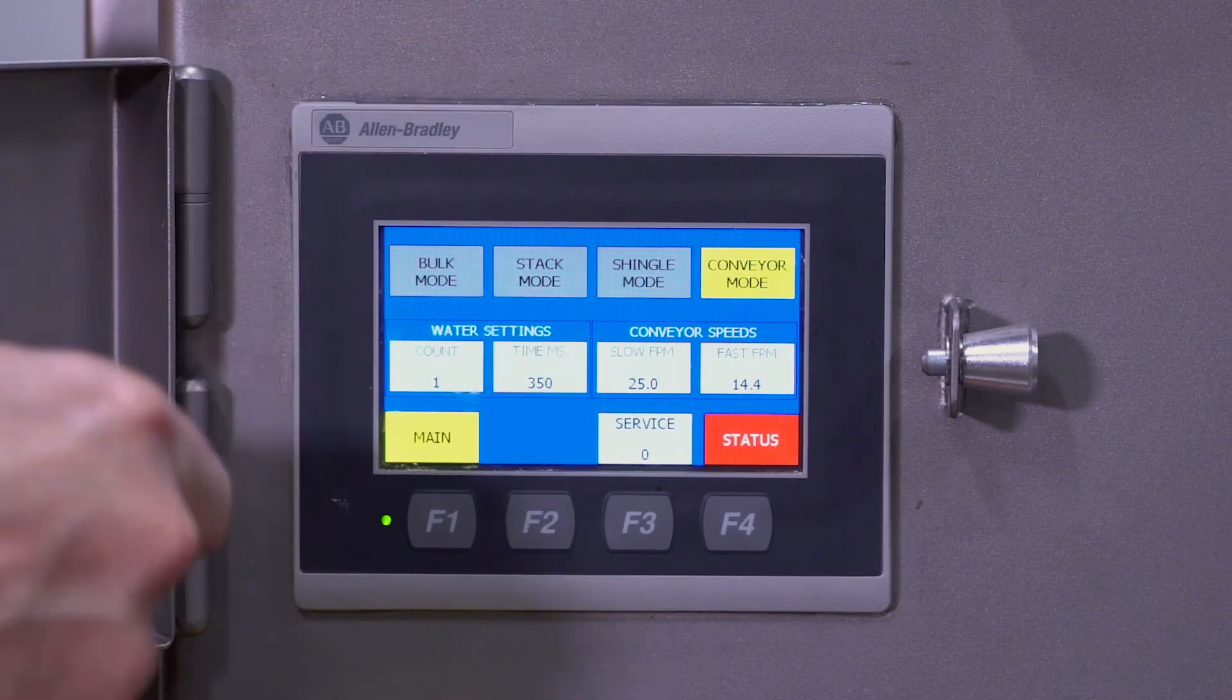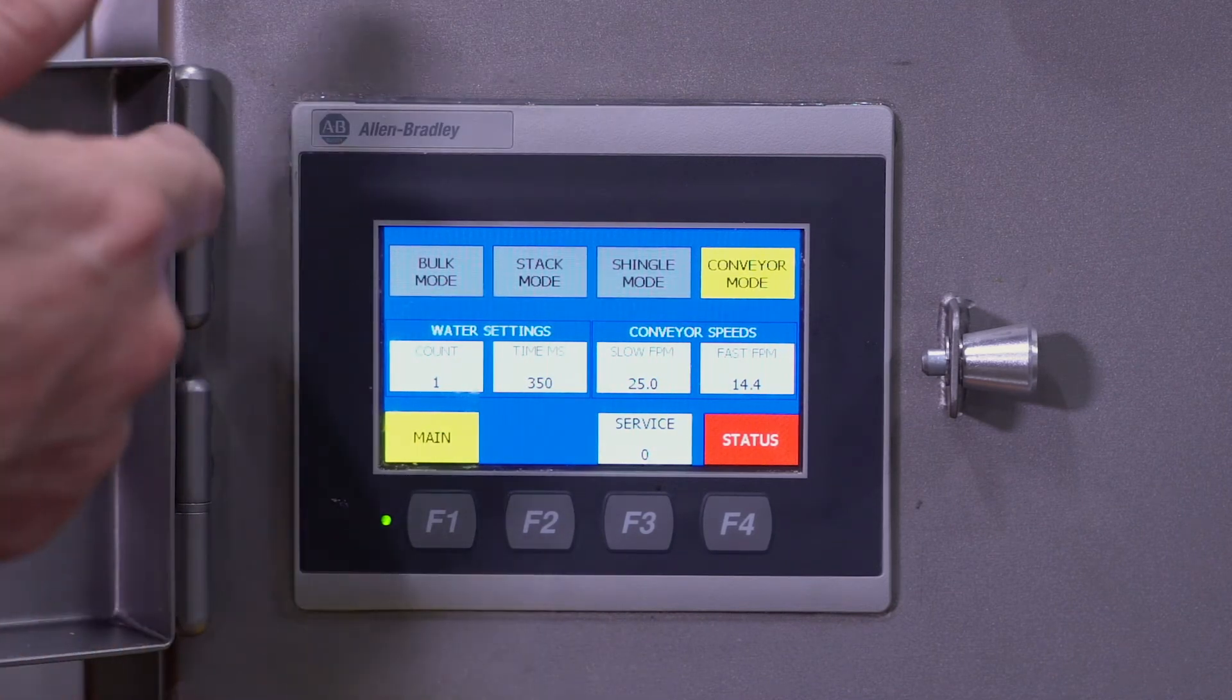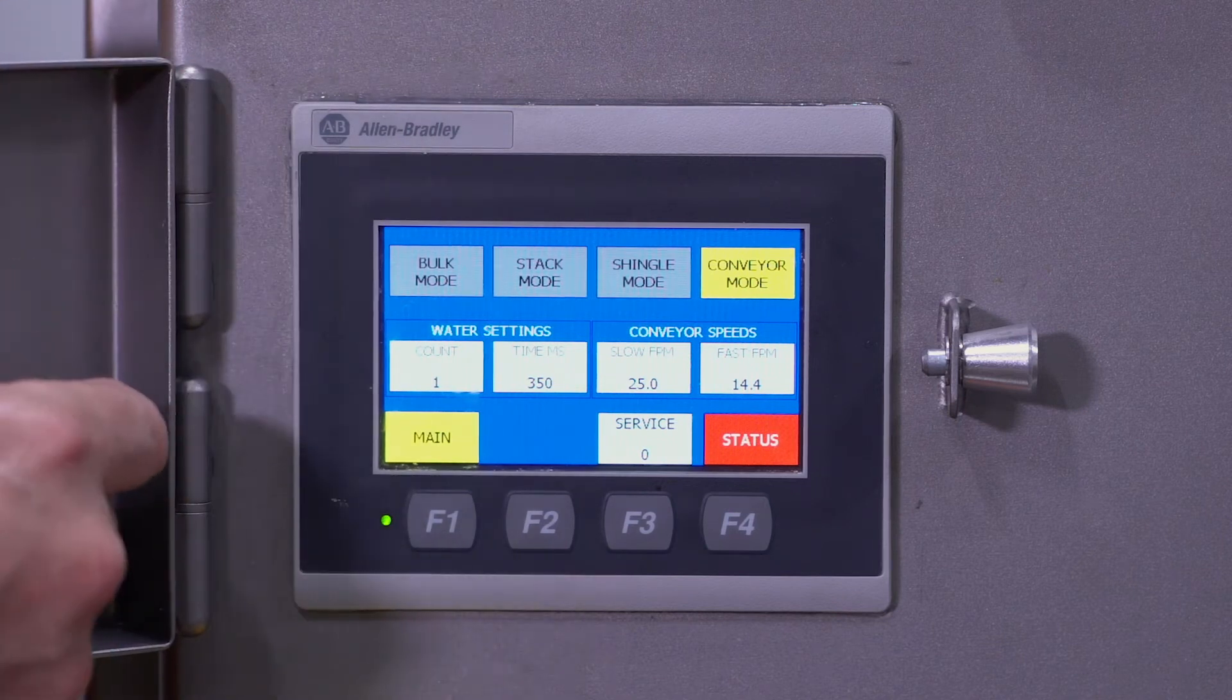To change modes, you have to have the machine off. It's the only control that you have to turn the machine off to adjust.